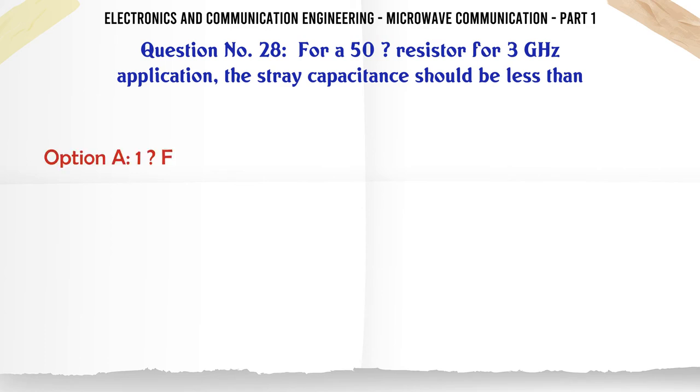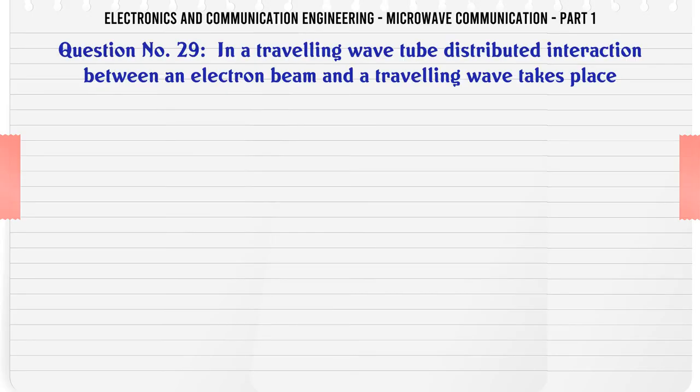For a 50 ohm resistor for 3 GHz application the stray capacitance should be less than: A. 1 F, B. 1 nF, C. 1 pF, D. 0.1 pF. The correct answer is 0.1 pF.